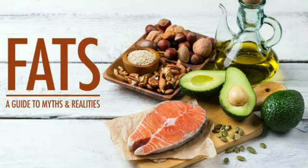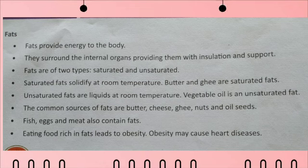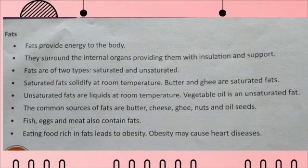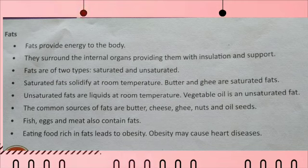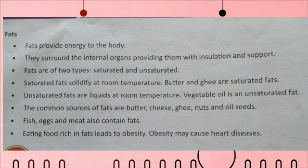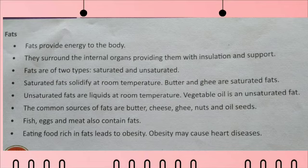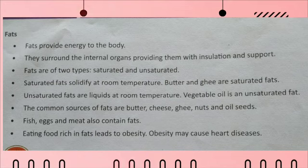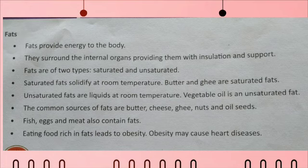Fats are also known as energy giving food because they provide energy to our body. Fats are of two types: saturated fats and unsaturated fats. Saturated fats are solid at room temperature, like butter and ghee, whereas unsaturated fats are liquid at room temperature, for example vegetable oils. Foods rich in fats are fish, meat, egg, butter, ghee, oilseeds, etc. Excess eating of fat leads to obesity, which can cause diseases like heart attack, high blood pressure, and high cholesterol. That's why we should intake very less fat in our diet.